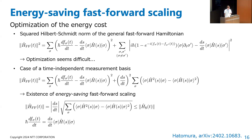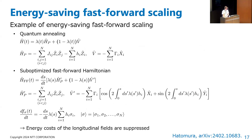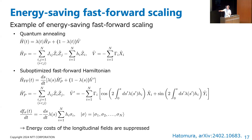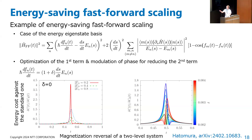By choosing the phase factor appropriately, I find that the energy cost of the optimal fast-forward Hamiltonian is smaller than the standard energy cost. So, there exists an energy-saving fast-forward Hamiltonian. This is my main finding in this preprint. As one example, I consider a quantum annealing Hamiltonian — a general spin glass Hamiltonian plus a transverse field driver Hamiltonian. By taking the phase in the computational measurement basis, we find the suboptimal fast-forward Hamiltonian.